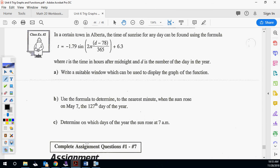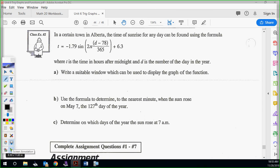All right. So last piece for this lesson here. In a certain town, Alberta, the time of sunrise for any day can be found using this formula: negative 1.79 sine 2 pi times d minus 78 over 365 plus 6.3, where t is time in hours after midnight and d is number of days in the year. So this is essentially saying t is the time in hours after midnight, when the sun's coming up each day of the year. This function represents the sun rising time each day of the year.